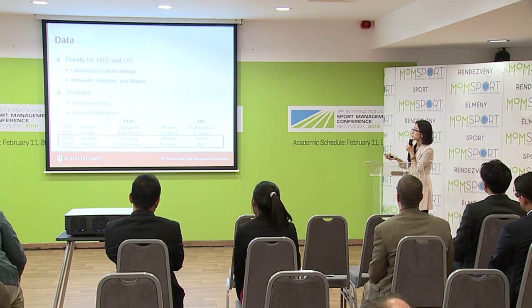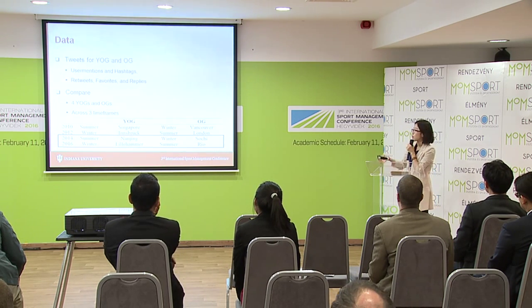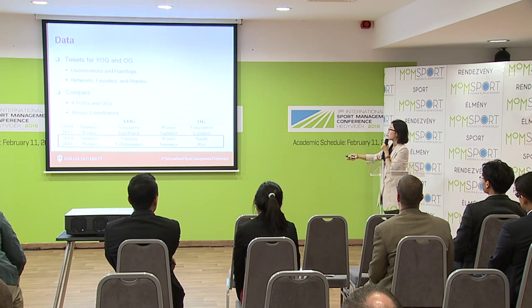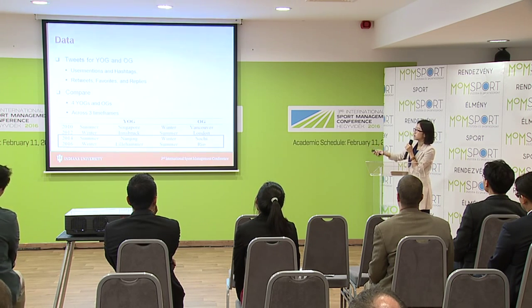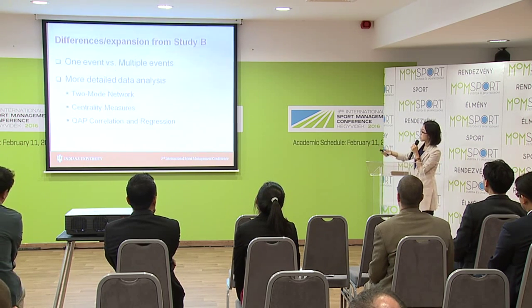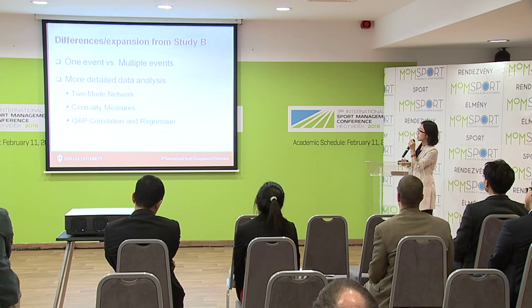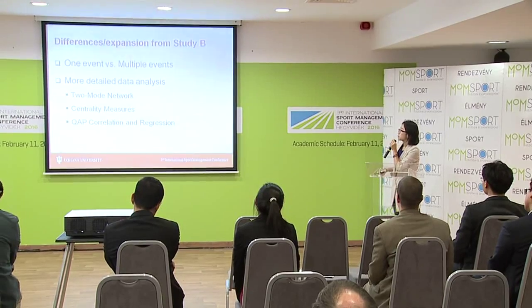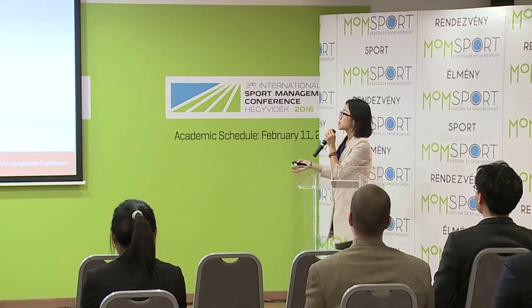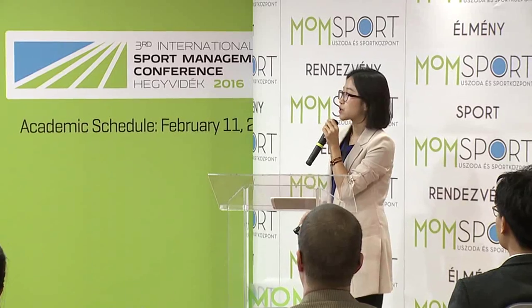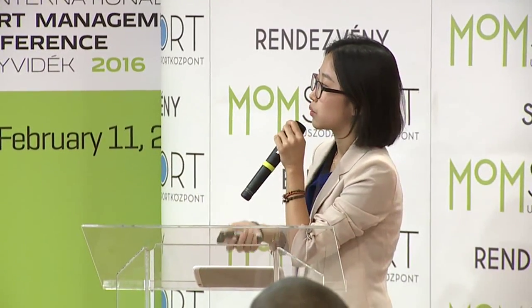For my future study, I'm going to collect data from all eight events, because there might be two groups of fans — one group for the summer games and one group for the winter games. As I'm considering multiple events for my future study, I'm going to use two-mode networks and measure centrality and also quadratic assignment procedure correlation and regression to find the difference between the US Olympic Games and Olympic Games.